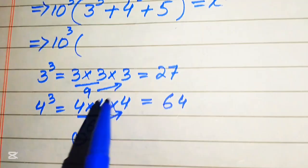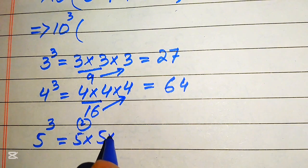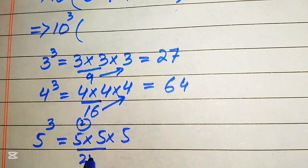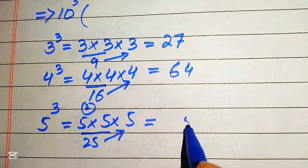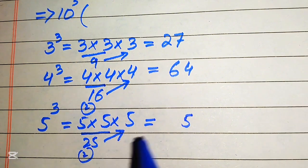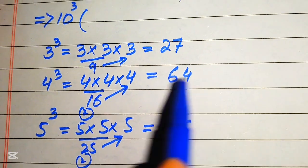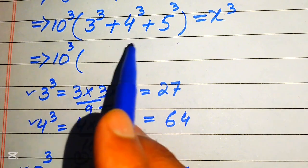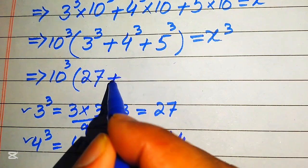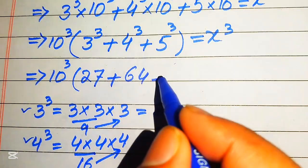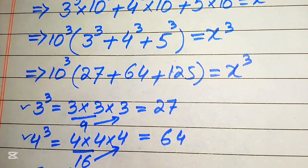For 5 cubed: 5 times 5 is 25, and 25 times 5 — 5 fives are 25, write 5 carry 2, 5 twos are 10 plus 2 becomes 12 — so 5 cubed equals 125. We now replace these values in the equation: 10 cubed times the quantity 27 plus 64 plus 125 equals x cubed.